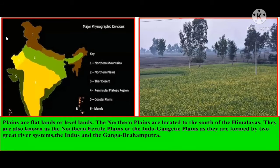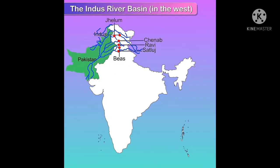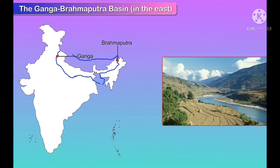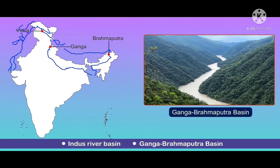The Northern Plains are located to the south of the Himalayas. They are also known as the Northern Fertile Plain, as they are very fertile, or the Indo-Gangetic Plains, as they are formed by two great river systems. In these images, you can see the Indus River Basin and the Ganga-Brahmaputra River Basin, which forms the Northern Plains.